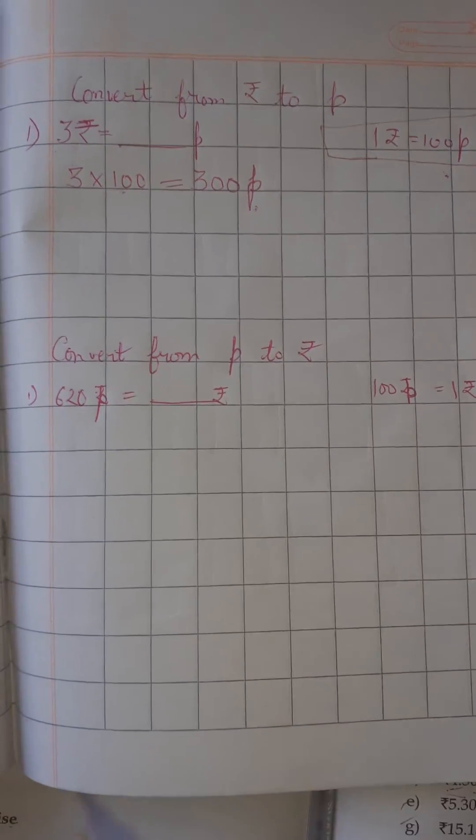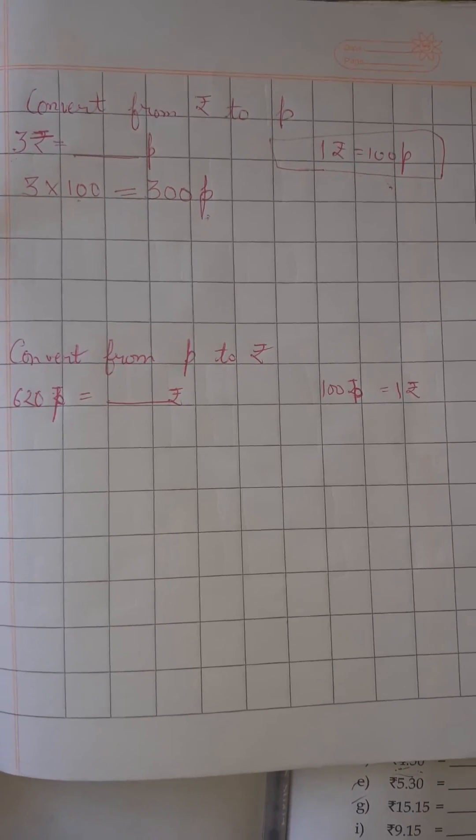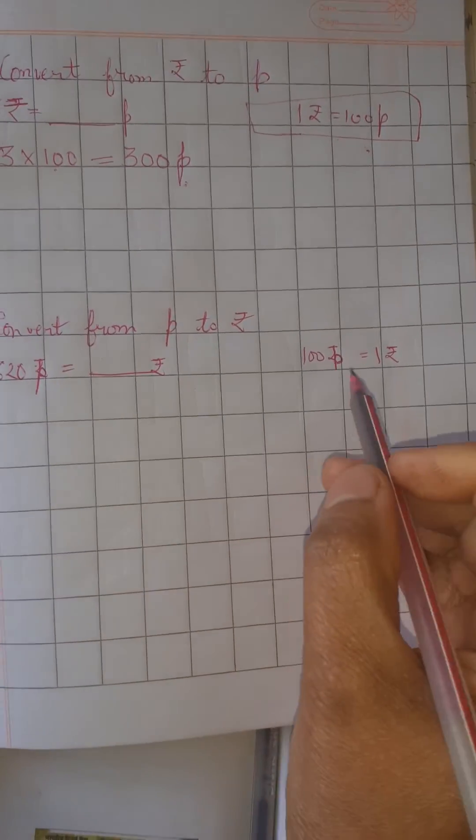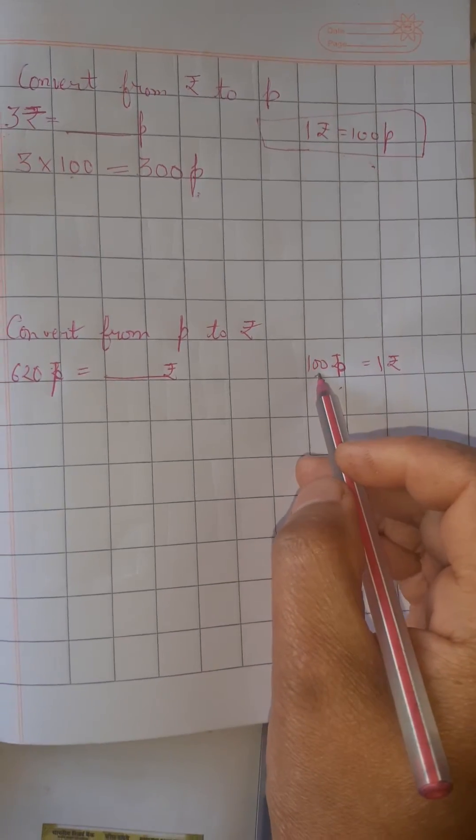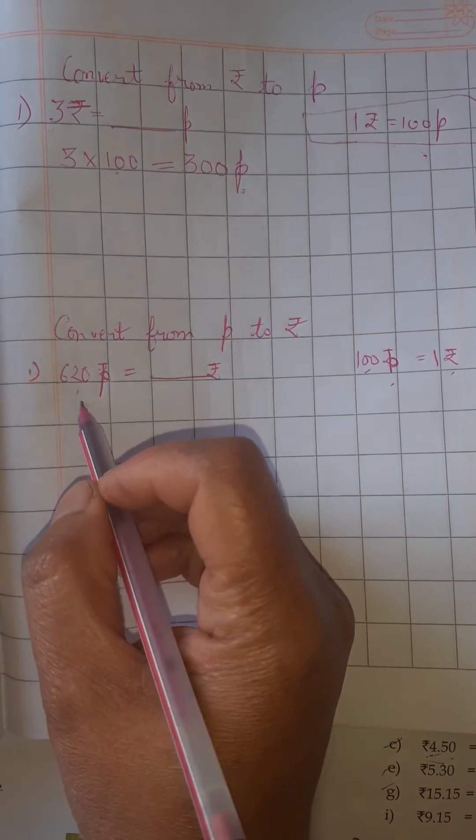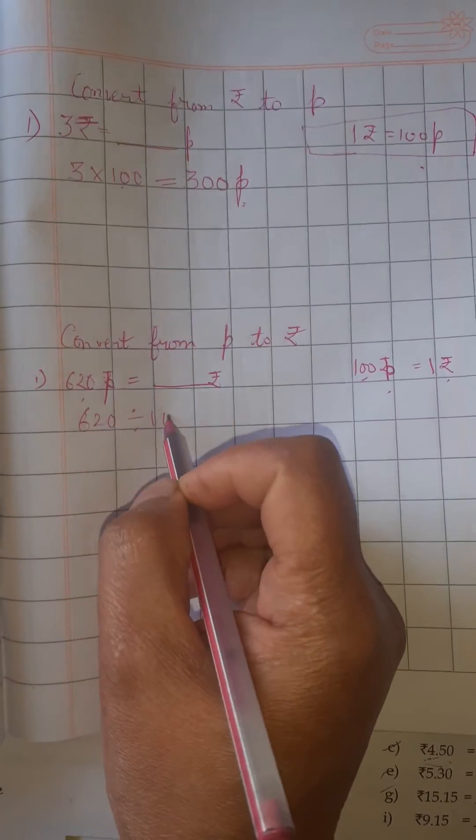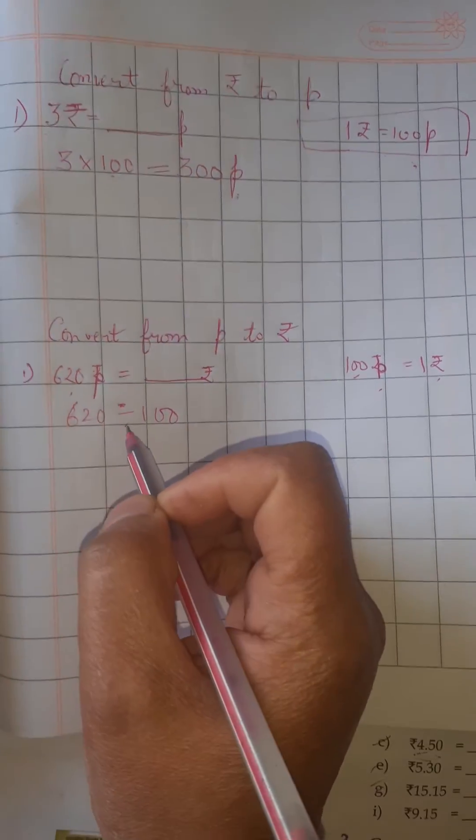But the situation comes when you have to convert from paisa to rupees. As you all know, 100 paisa is equal to 1 rupee. So here also, 620 divided by 100, because you have to convert into rupees.